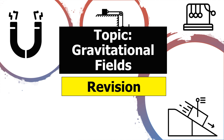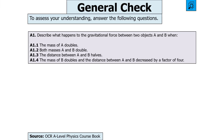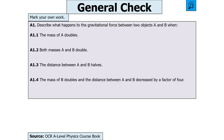Let's now start looking at the gravitational fields topic. The first question says: describe what happens to the gravitational force between two objects A and B when the mass of A doubles; then the mass of both A and B double; then the distance between A and B halves; and finally the mass of B doubles and the distance between A and B decreases by a factor of four. Pause the video now, then unpause when you want to go through your answer.